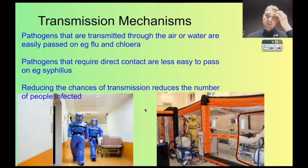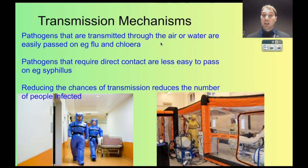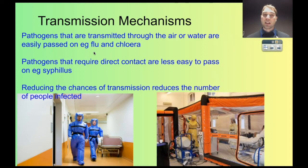Pathogens can be transmitted in a variety of ways, and depending on how they're transmitted might increase or decrease their chances of being passed on. Pathogens passed through the air or water are particularly easily transmitted amongst a population. The flu virus, for example, is passed through the air in droplets that people cough up or produce when they're talking, so the flu can spread very, very easily via the air.